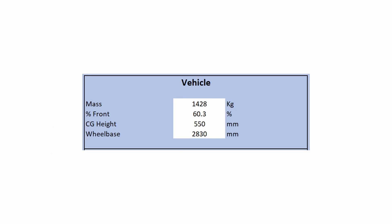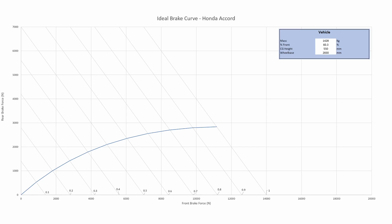Now let's look at the Honda Accord. This car has a mass of 1,428 kilograms, a front weight of 60.3%, an assumed CG height of around 550 mm, and a wheelbase of 2,830 mm. Look at this curve — it's much flatter, much more horizontal, because we need to get far more braking power out of those front wheels since there's so much more weight sitting on them. Also, with the higher CG, we get more weight transfer happening during braking, which puts a larger and larger requirement on the front brakes — we need to ask those front brakes to do far more work than the rear.